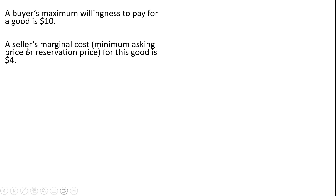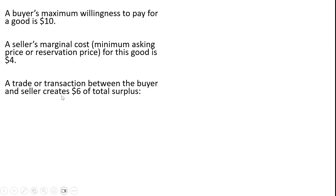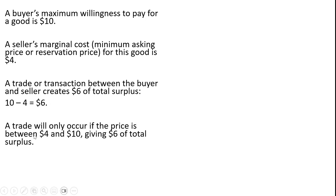Suppose a buyer's maximum willingness to pay for a good is $10. A seller's marginal cost, or minimum asking price for this good, is $4. A transaction between the buyer and seller creates $6 of total surplus — $10 minus $4, the buyer's maximum willingness to pay minus the seller's marginal cost. A trade will only occur if the price is between $4 and $10, and this will give $6 of total surplus regardless of the price in this range.